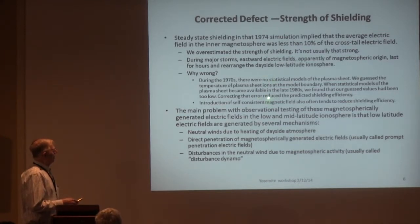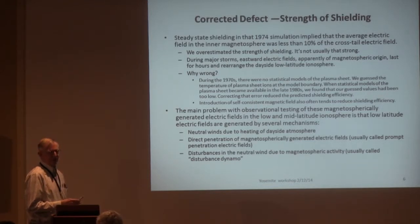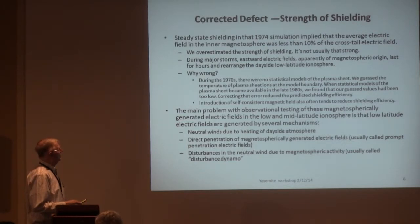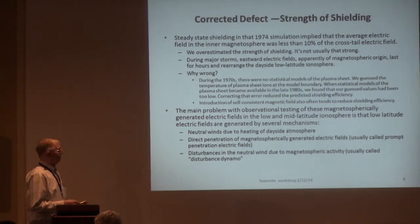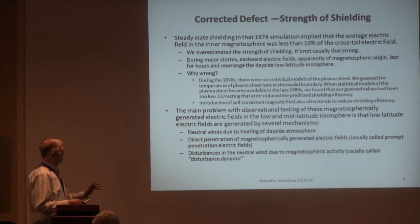The modern RCM gets a much more variable efficiency. The main problem was kind of a dumb thing: in the 1970s we didn't have an empirical model of the plasma sheet, so we didn't know what to put in for the plasma sheet temperature and the boundary condition. When the empirical models came along in the late 80s, it became clear that we considerably underestimated the plasma sheet temperature, and changing that reduced the shielding efficiency quite a bit. Introduction of the self-consistent magnetic field, which was much later, also tends to reduce the shielding efficiency.